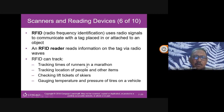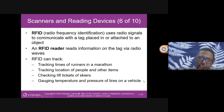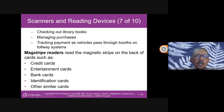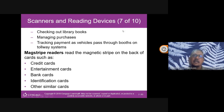RFID can be used to track times of runners in a marathon, in cycling races, checking ski lift tickets, monitoring tire temperature and pressure on vehicles, checking out library books, managing purchases, and tracking payment as vehicles pass through toll systems — which we use in Malaysia to pay tolls.